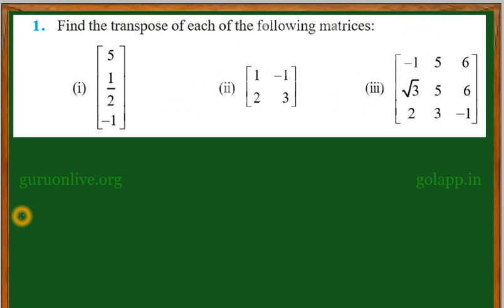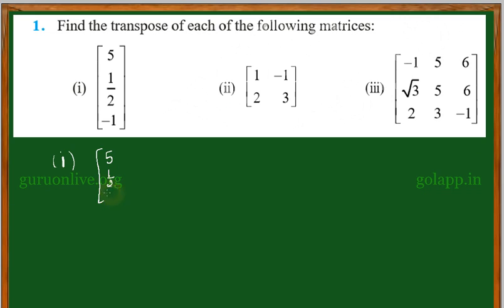Taking the transpose means interchanging the rows and the columns to get the transpose of the matrix. For the first one, the given matrix is [5, 1/2, -1], and we have to take its transpose.